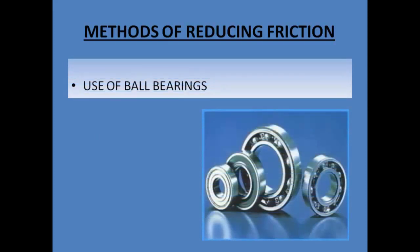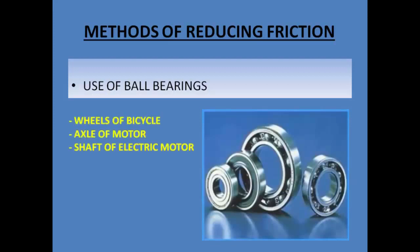Next is use of ball bearings. In order to reduce the friction between the parts of a machine, ball bearings are often used. Here, hard steel balls are introduced between the moving parts. This reduces the friction considerably. The free wheels of bicycle, the axle of motor cars and the shaft of electric motors are examples of places where ball bearings are often used. These ball bearings reduce the friction and make the various parts of machinery move very freely.